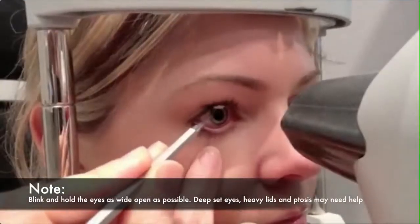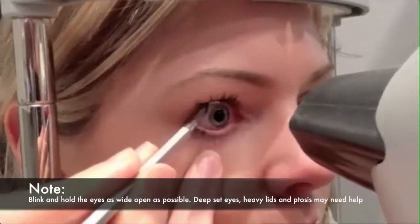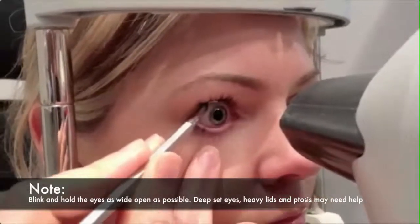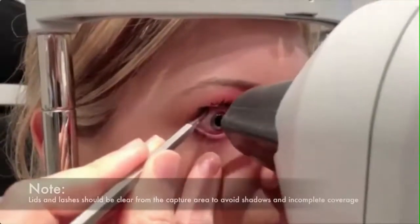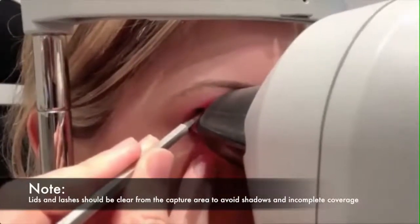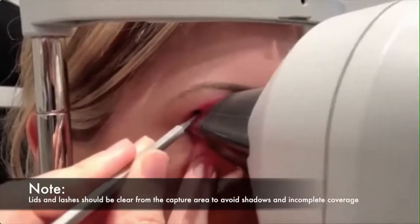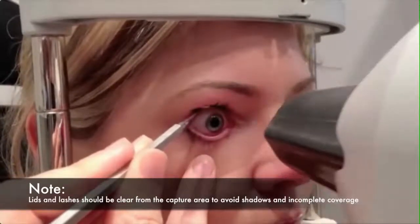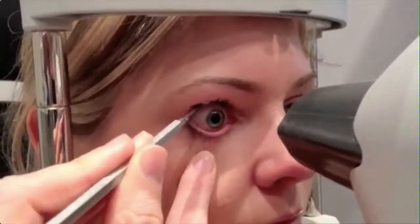It is also important to note that when the cone comes close to the cornea, the lid should be completely out of the way to avoid decreased capture area and shadows of the Placido mires. A cotton bud, lid retractor, or finger manipulation of the lid can aid this.